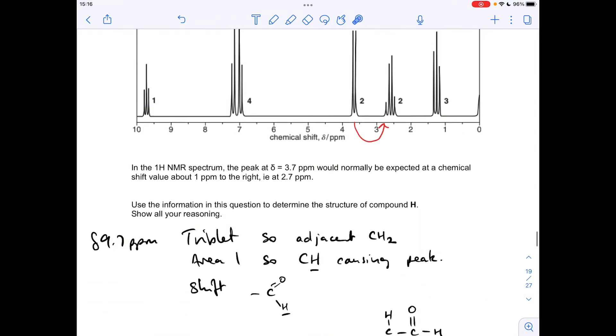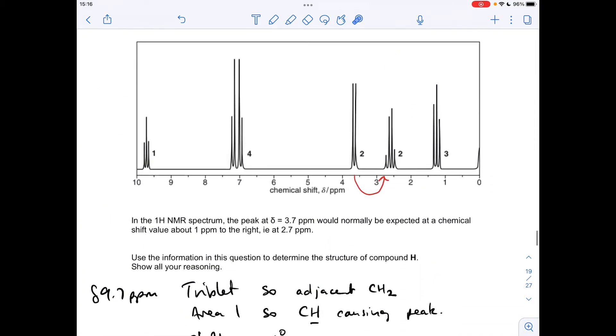So we'll move on to the next signal, which is the one that's in the wrong place, so this one here. So what can we say about this? Well, it's a doublet, so there's an adjacent single hydrogen, an adjacent CH. It's got an area of 2, so there's 2 hydrogens in this environment that's causing this signal. So it's a CH2 group effectively. And the shift, well, there's 2 possible options. It could be an H to C to C double bond O proton, or it could be an H to C to benzene ring.